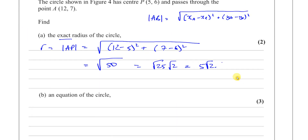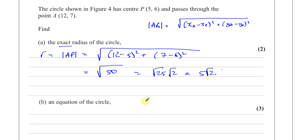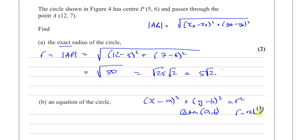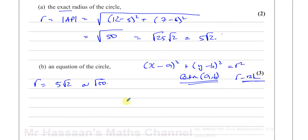Part B says find an equation of the circle. The general form for the equation of a circle, when we know the center and the radius, is (x minus a) squared plus (y minus b) squared equals r squared, where (a, b) is the center and r is the radius. So if we know the center and the radius, we can find the equation of the circle. We know that the radius is 5√2, or equivalently the square root of 50, and we know the center of the circle is point P.